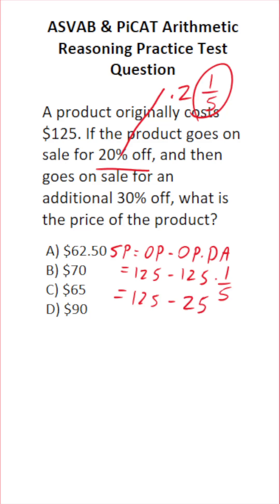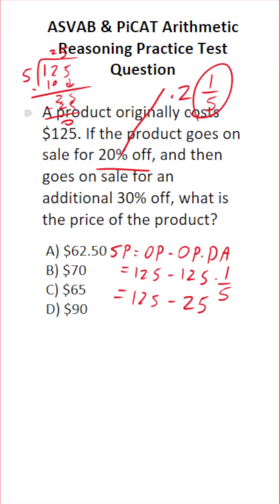If you couldn't do that mentally, you could always do it off to the side: 125 divided by 5. 5 goes into 12 two times without going over. 5 times 2 is 10. 12 minus 10 is 2. Drop down the 5. 5 times 5 is 25. So 125 minus 25 is 100.